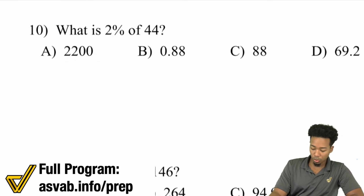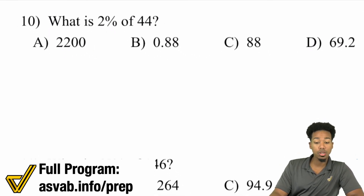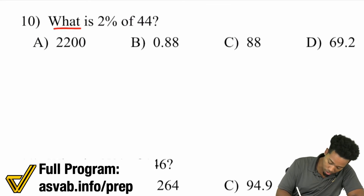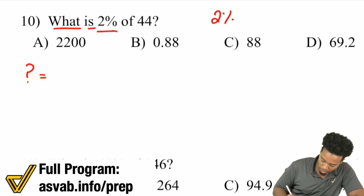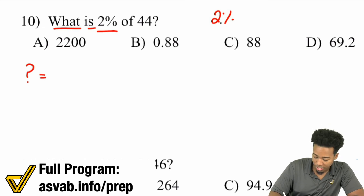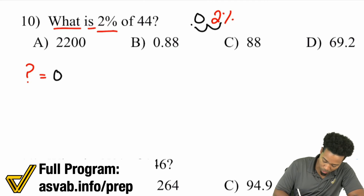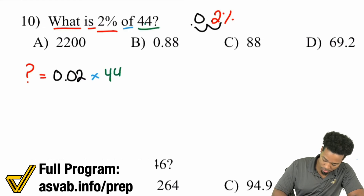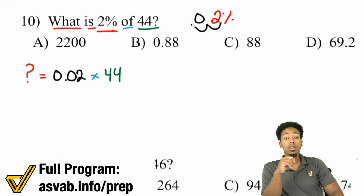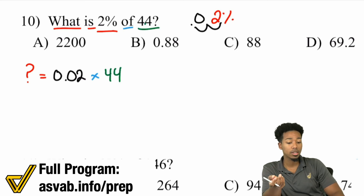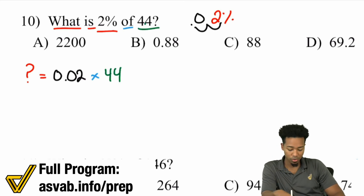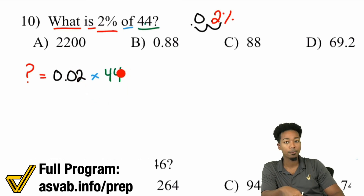Let's look at a single-digit percent: 2% of 44. We translate: question mark equals 2% — converting to a decimal means moving the decimal two places to the left, giving 0.02 — times 44. Now here's a shortcut: when multiplying by decimals, ignore the decimal first. What's 2 times 44? That's 88.